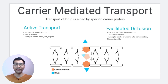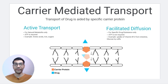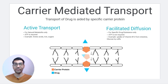Active transport is used for natural metabolites, while facilitated diffusion involves very specific binding. For example, if a binding site is designed specifically for vitamin B12, no other chemical substance can bind with it. In contrast, in active transport, any chemical substance belonging to its natural metabolites can bind with the carrier protein.